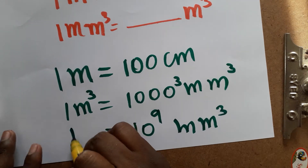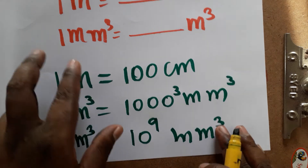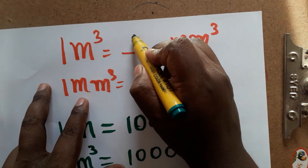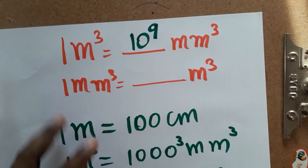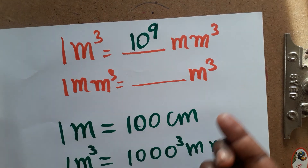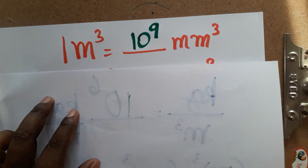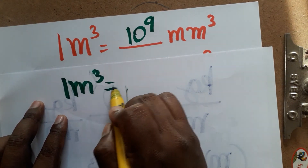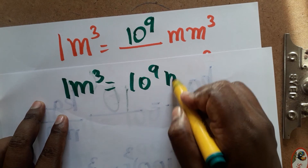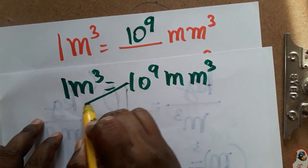So, 1 meter cube is equal to 10 power 9 millimeter cube. Now, for the second conversion: 1 millimeter cube is equal to how many meter cubes? This is the opposite of what we just did. We take the same value: 1 meter cube equals 10 power 9 millimeter cube.